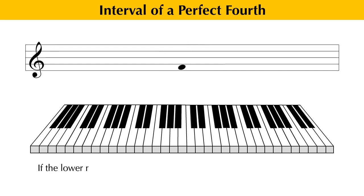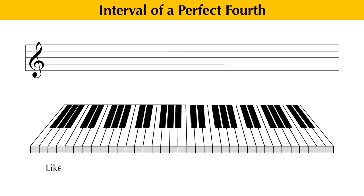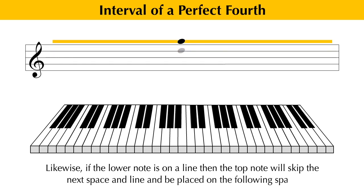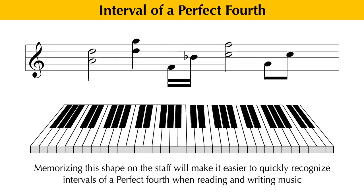For example, if the lower note of an interval is on a space, then the top note will have skipped the next line and space above it and be placed on the following line. Likewise, if the lower note is on a line, then the top note will skip the next space and line and be placed on the following space. Memorizing this shape on the staff will make it easier to quickly recognize intervals of a perfect fourth when reading and writing music.